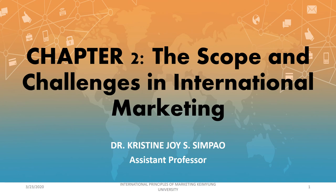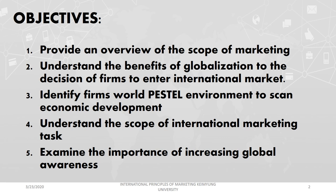For this chapter, we're going to identify the scope, the challenges, and the environment of international marketing. We define international marketing as the performance of business activities designed to plan, price, promote, and direct the flow of a company's goods and services to consumers or users in more than one nation. Our customer here is not only the local market but also the foreign market — we're doing those activities for a profit. The only difference between domestic marketing and international marketing is that international marketing activities take place in more than one country.